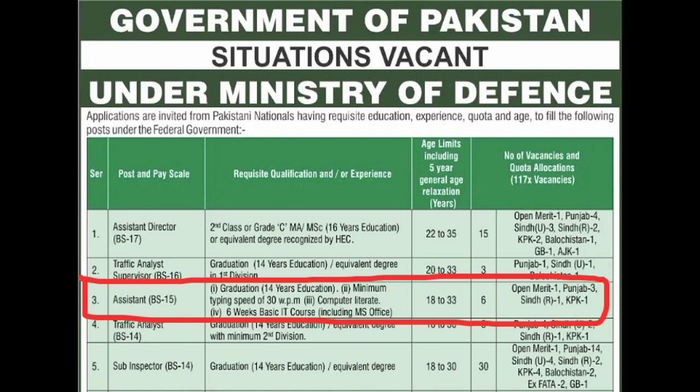Third post है Assistant, scale 15। Qualification: 14 years education यानी graduation required है। Minimum typing speed of 30 words per minute। Computer literate होना चाहिए। Six weeks basic IT course किया हो, including MS Office। Age limit: 18 to 33 years। 6 posts announced: open merit की 1, Punjab की 3, Sindh Rural की 1, KPK की 1।